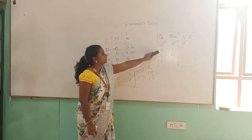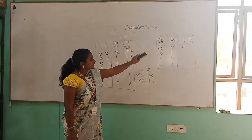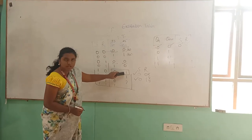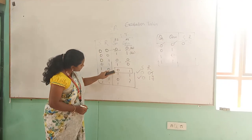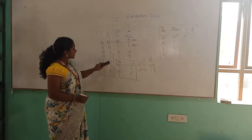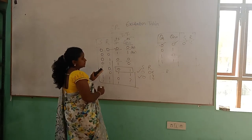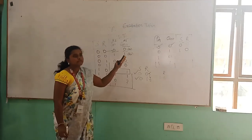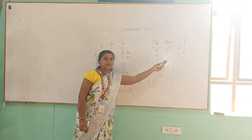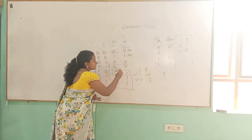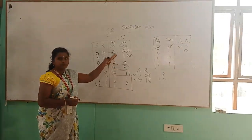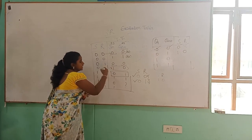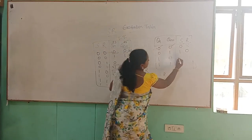The next case is QN=0 and QN+1=1. Checking the truth table, this occurs only when S=1 and R=0 — so there is only one possibility. Therefore S=1 and R=0. For the third combination, QN=1 and QN+1=0: checking the truth table, this corresponds to S=0 and R=1. So I am writing S=0 and R=1.